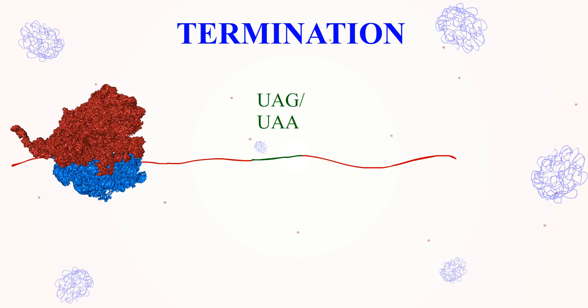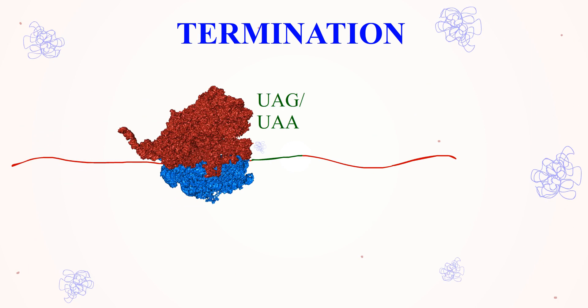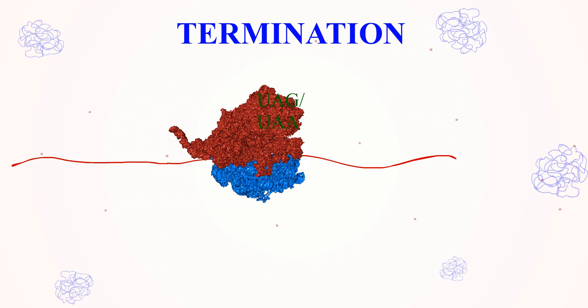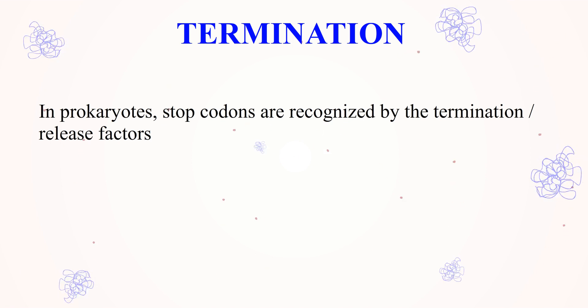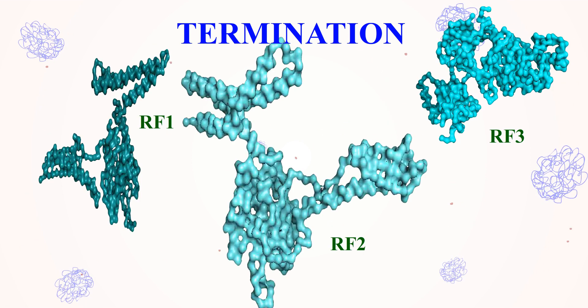Elongation continues. The final process in translation is termination. Termination occurs when the ribosome encounters a stop codon in the mRNA. In prokaryotes, stop codons are recognized by the termination, or release, factors named RF1, RF2, and RF3.